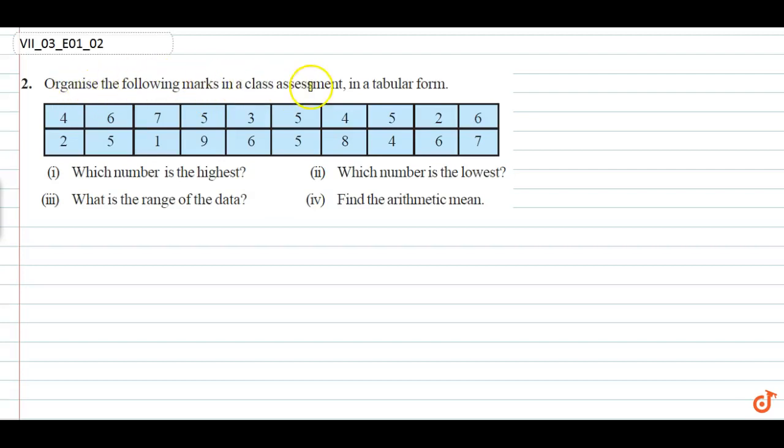The question is to organize the following marks in a tabular form. We have four questions to answer. Let's make a table with three columns: Marks, Tally, and Frequency.